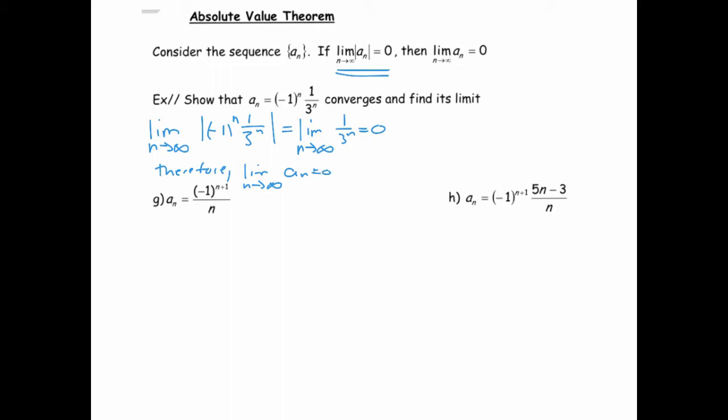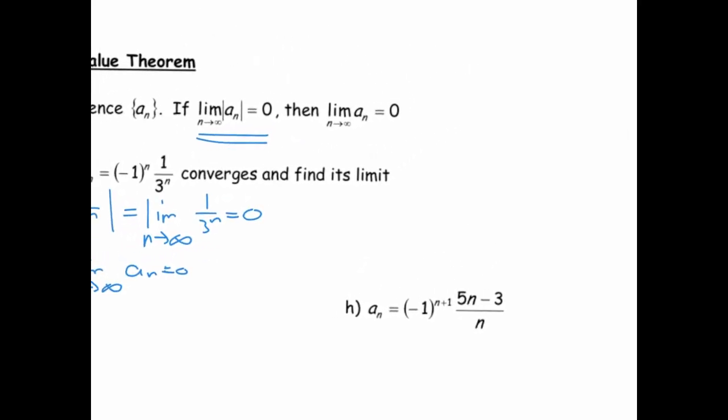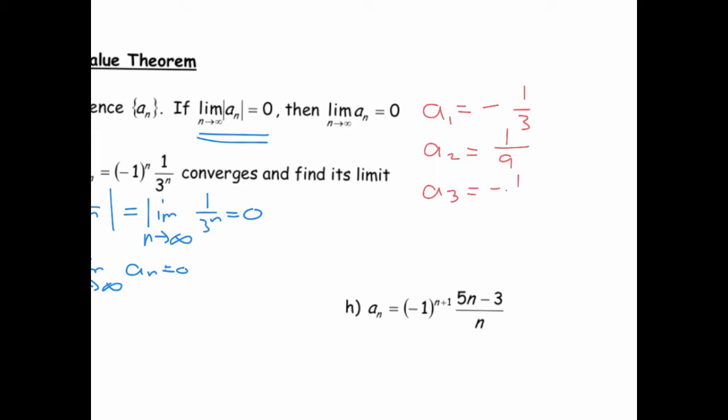One way to make sense of that is you can see, if we plug in some terms: a_1 would be -1/3, a_2 would be positive 1/9, a_3 would be -1/27. You can see the terms are getting smaller in absolute value, but they're just dancing around zero on opposite sides.